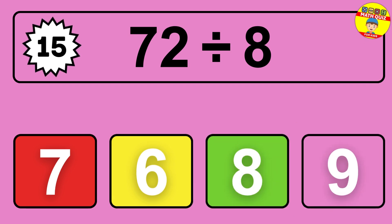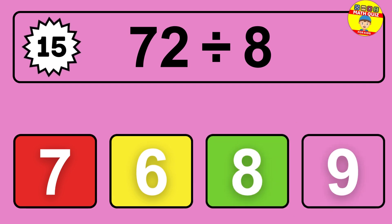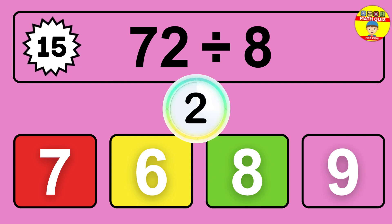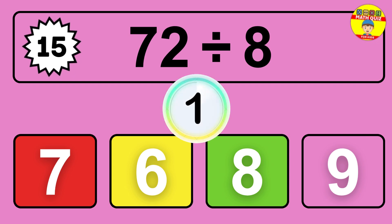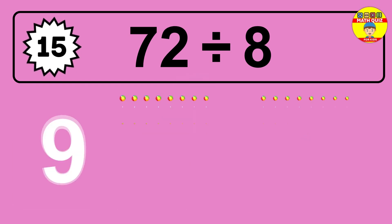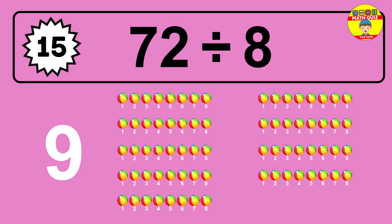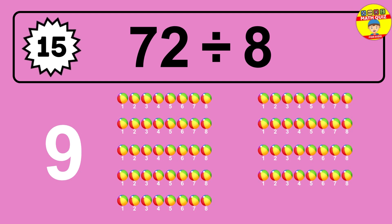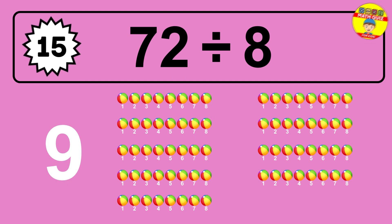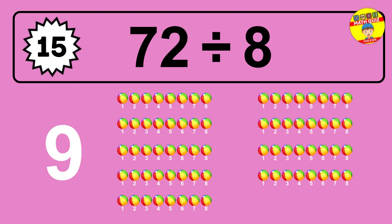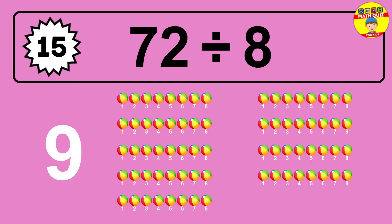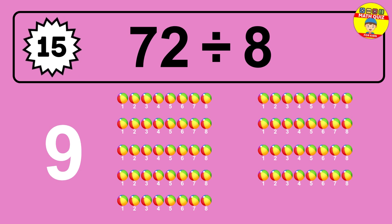What is 72 divided by 8? Imagine this: you have 72 objects to divide into groups of 8. How many groups can you make? Let's think about it. Ready to find out? Let's break it down. Let's imagine you have 72 objects. Can you picture them lined up?